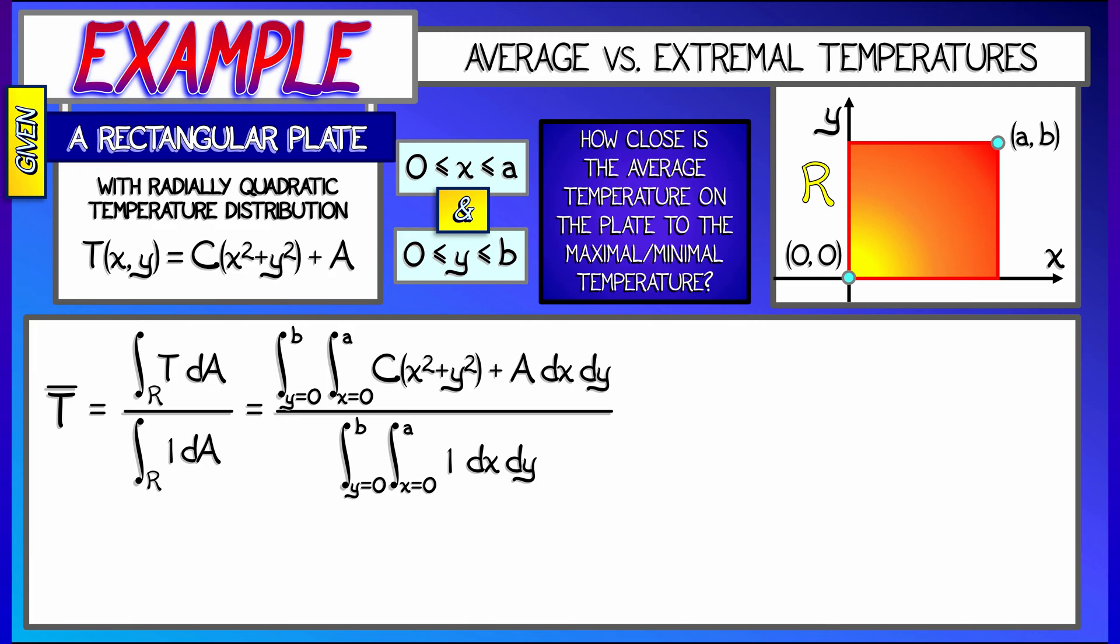Now, that bottom integral, well, that's really simple. That's just the area of the rectangle. That's A times B. The top integral can be broken up into two parts, where we're integrating x squared plus y squared, and then we're integrating A separately. That second integral, well, that's easy. I just get A after canceling out.